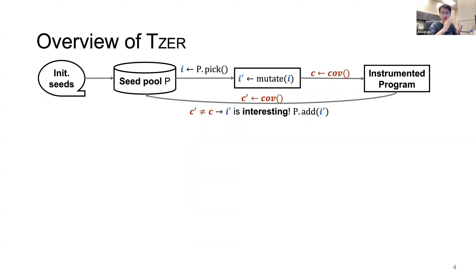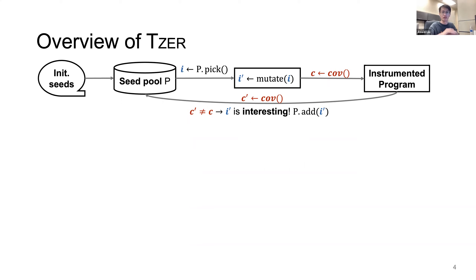Let's recap the typical workflow of coverage-guided fuzzing. The fuzzer first initializes a seed pool with a set of initial test cases, which can come from existing unit tests or open-source code. By mutating the seeds, we produce mutated test cases called mutants to generate new coverage. We instrument coverage before and after executing each mutant. If a mutant brings new coverage, we consider it interesting and add it to the seed pool. The only variable in this fuzzing process is the time limit.